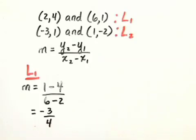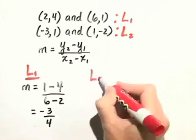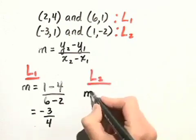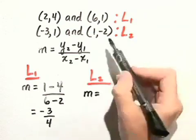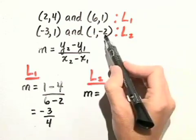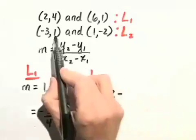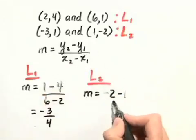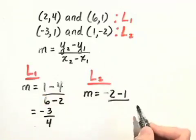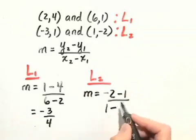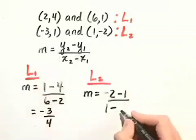Now let's look at L sub 2. Let's find the slope of that line. So again, we'll use our slope formula and take the difference of the y coordinates, so let's start here with the second point, y sub 2. We have negative 2 minus y sub 1 is 1 over x sub 2, which is 1, minus x sub 1, which is negative 3.